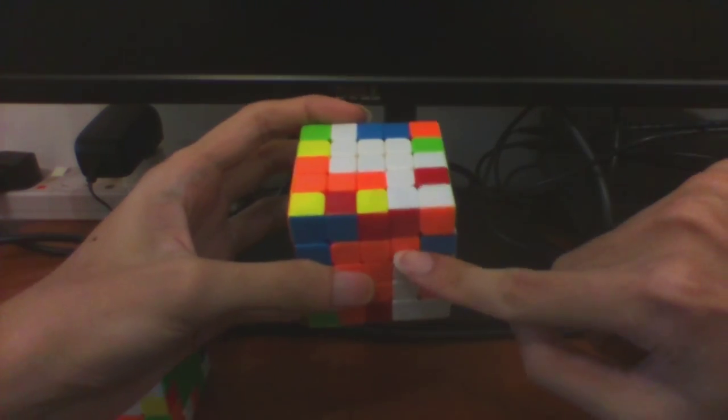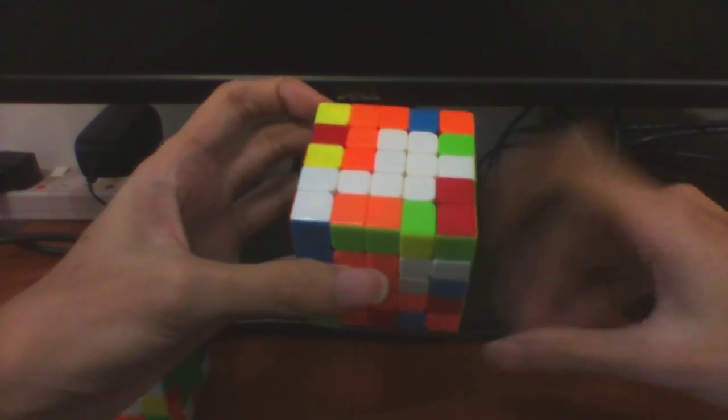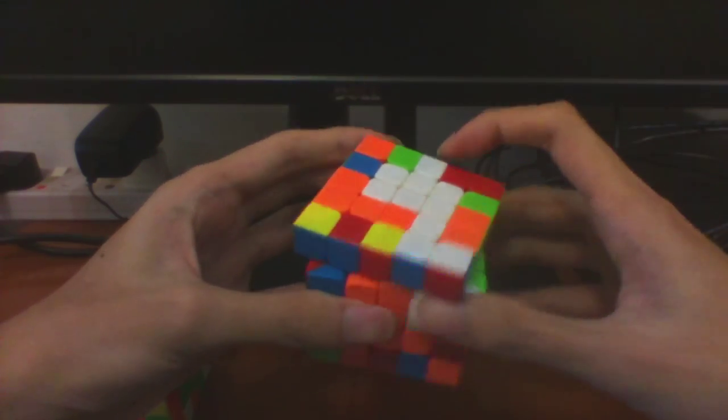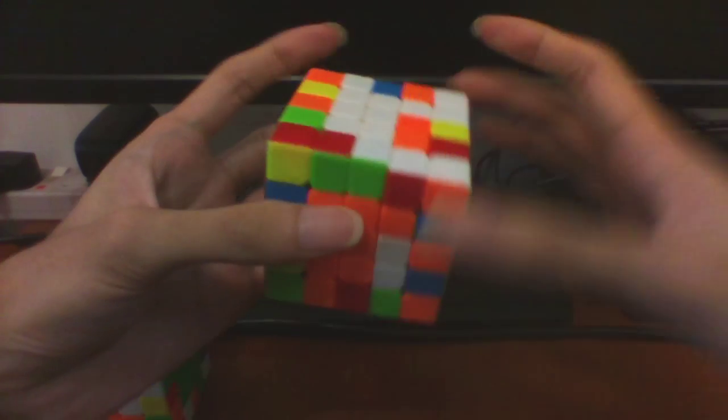For this angle, it's the same thing. Bring this X center to the bottom first, then AUF, insert. Again, a total of 7 moves.